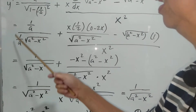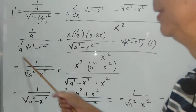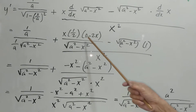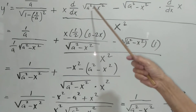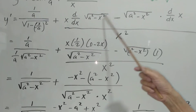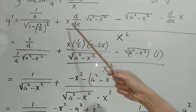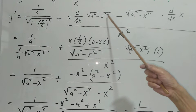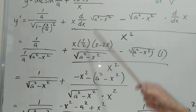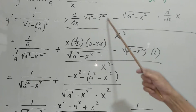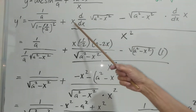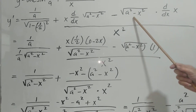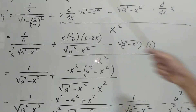Now for the application of the quotient rule: using the power formula, the square root is raised to the 1/2 power. The derivative of (a squared minus x squared) to the 1/2 is: bring down 1/2, subtract 1 from the exponent to get negative 1/2, so it goes to the denominator. Then we multiply by the derivative of (a squared minus x squared), which is negative 2x. And the derivative of x is 1.